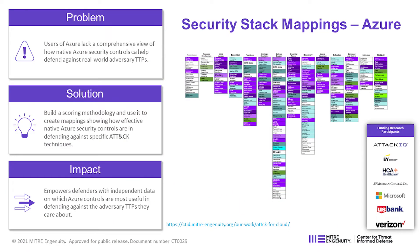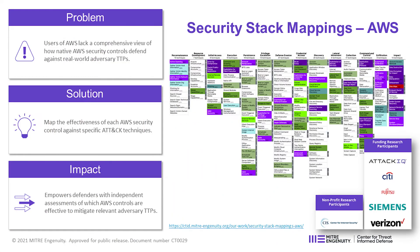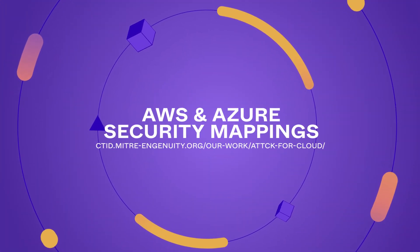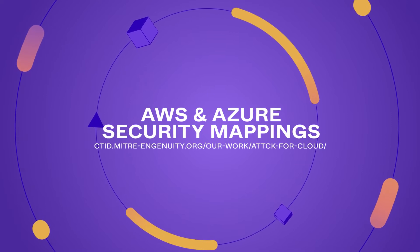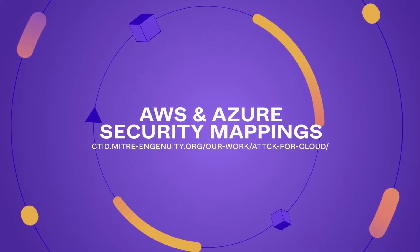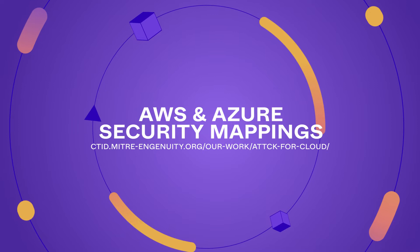What we've done is we've developed an open, freely available set of mappings between the security capabilities of Azure and the security capabilities of AWS back to real-world adversary behaviors described in ATT&CK. So now you can go to our website, download a copy of these mappings, and see for a specific security capability what adversary behaviors it is known to be able to mitigate.